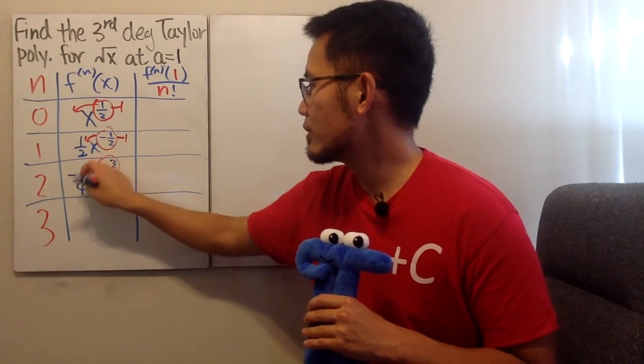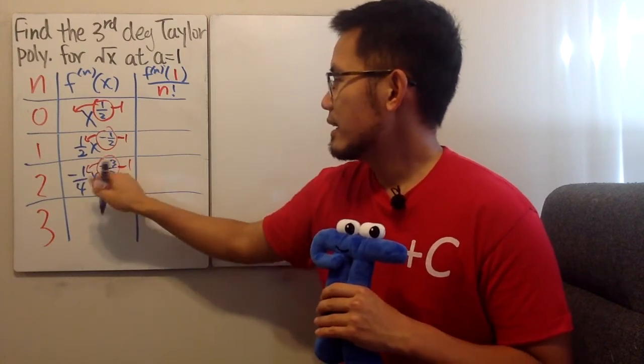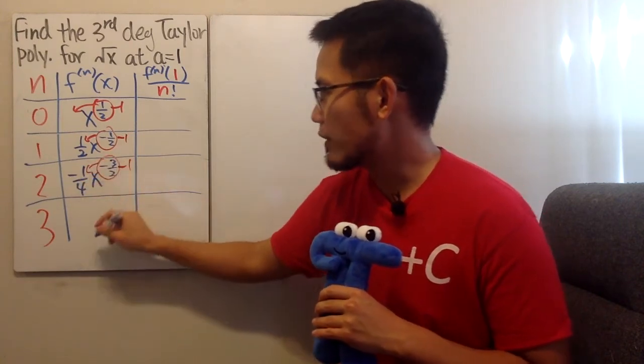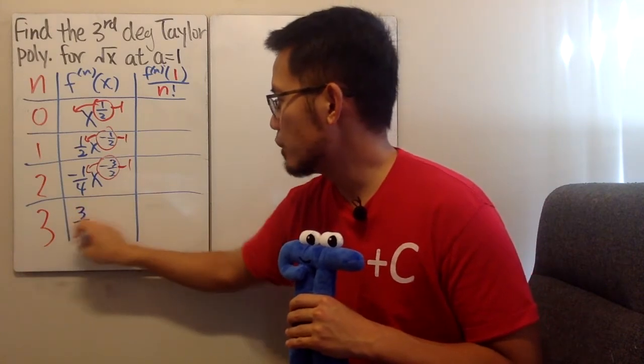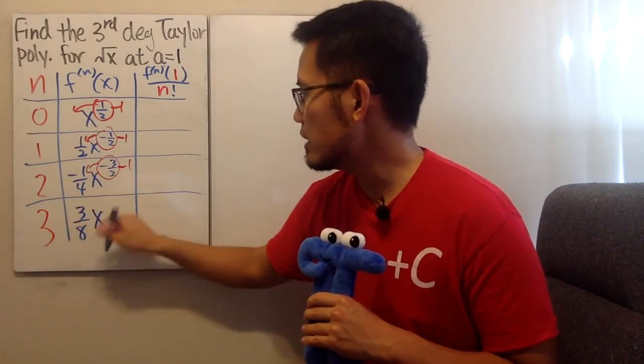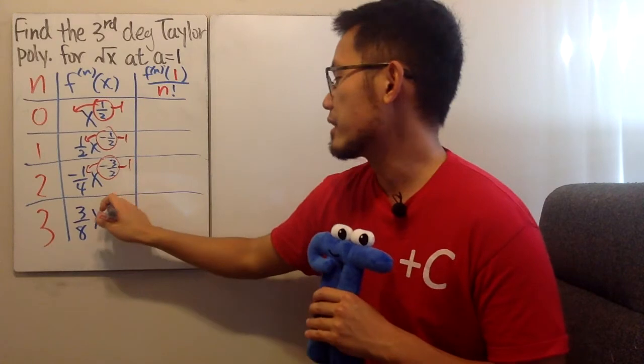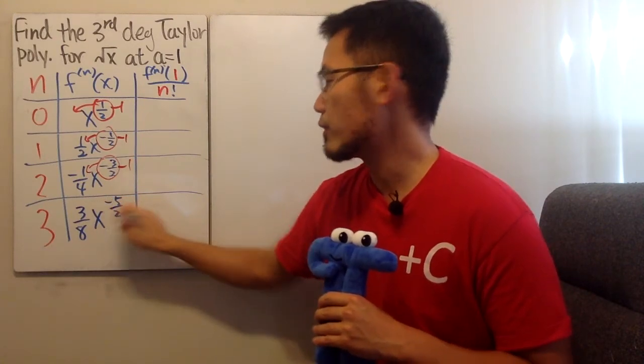Then do it again. Bring this to the front, minus 1. Negative 1 over 4 times negative 3 over 2 is positive 3 over 8. And then x to the negative 5 over 2. Like that.